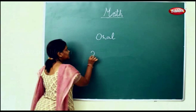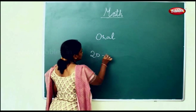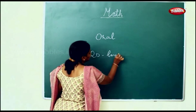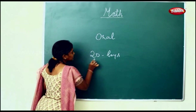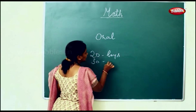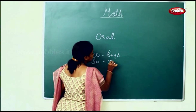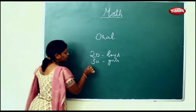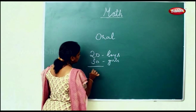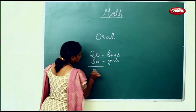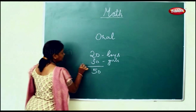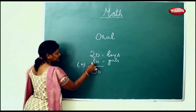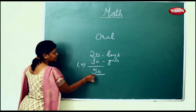20 boys and 30 girls are studying in the class. Find the total number of children. Total means a plus. 20 plus 30 is 50.